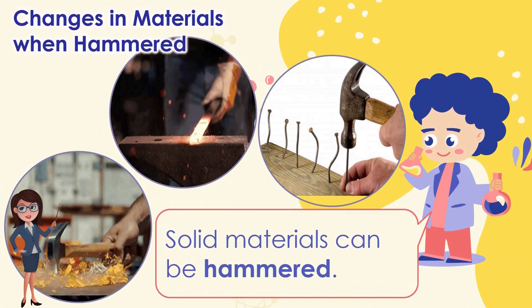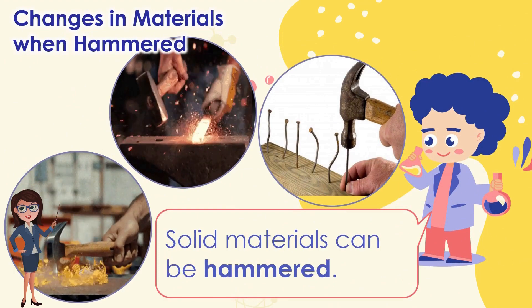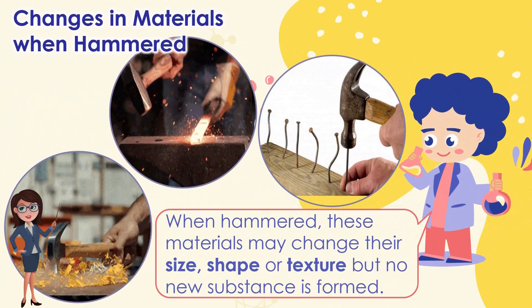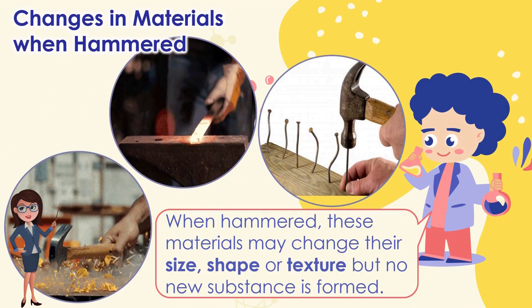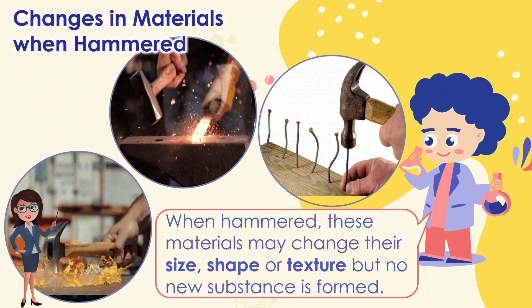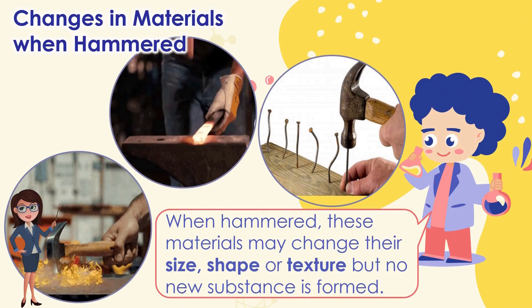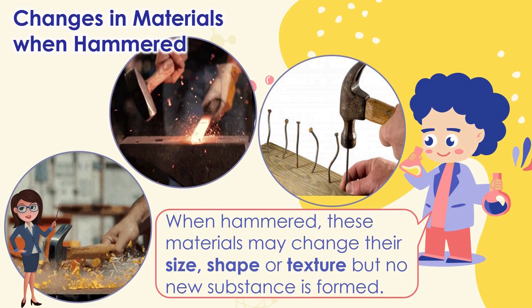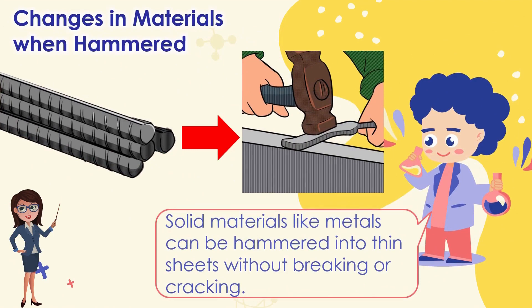Solid materials can be hammered. When hammered, these materials may change their size, shape, or texture, but no new substance is formed.